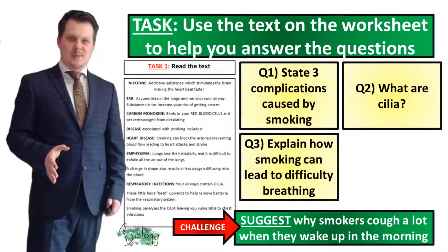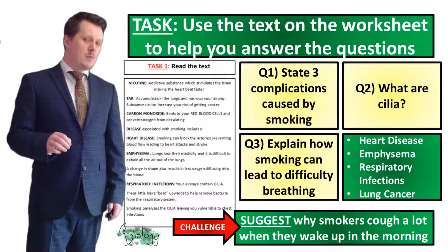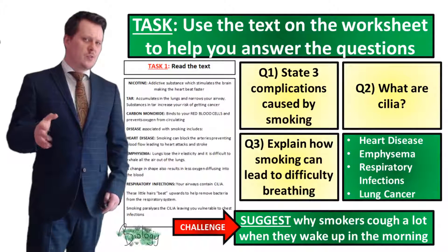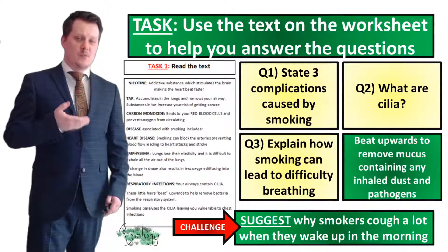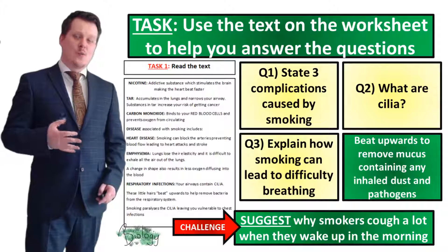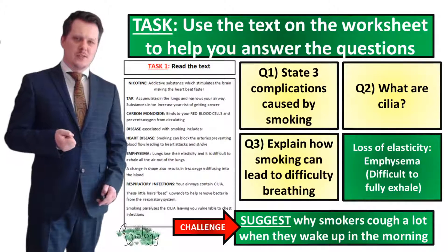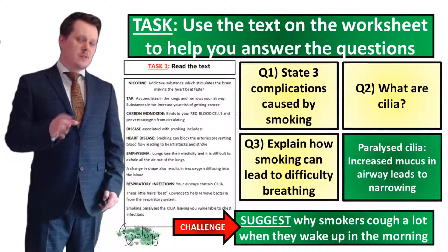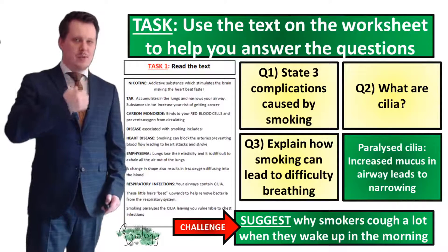Three complications that can be caused by smoking: heart disease, emphysema, respiratory infections, and lung cancer. Remember, those fatty deposits in the arteries can also lead to heart attack and strokes. Cilia are little hairs found in the airways — the trachea, bronchus, and bronchioles — and they beat upwards to remove mucus containing all the dust, bacteria, and viruses you have inhaled. As for why this leads to difficulty breathing: emphysema prevents you from exhaling all the air from your lungs; paralysed cilia lead to more respiratory infections; and the build-up of mucus in the trachea, bronchus, and bronchioles narrows the airways, making it more difficult to get air into the lungs.